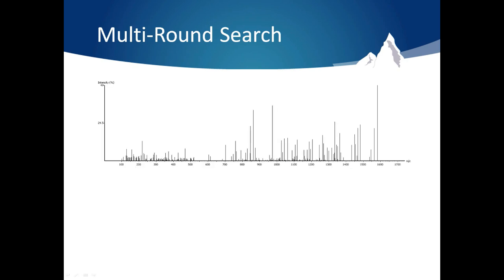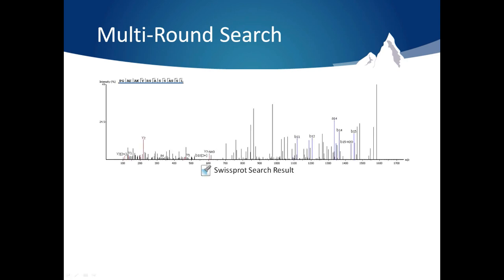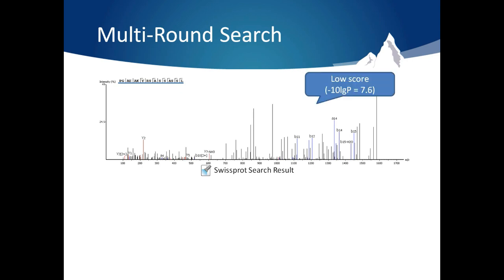For example, take this spectrum from a human antibody sample. Searching it against SwissProt, we are able to identify a peptide sequence, but not very confidently. The peptide does not come from an antibody protein. It is a poor peptide spectra match, and it has a low score below our 1% false discovery threshold.